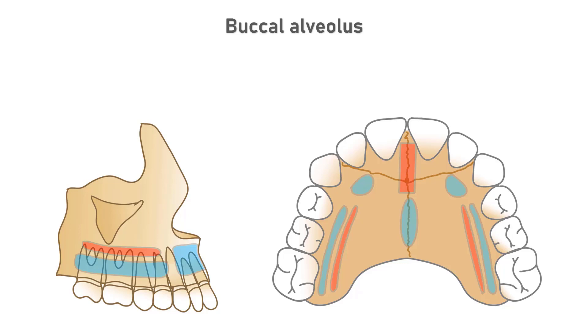In the picture, you can see sites for selection for implantation in the maxilla. The safe zones are indicated in blue while the danger zones are indicated in red.